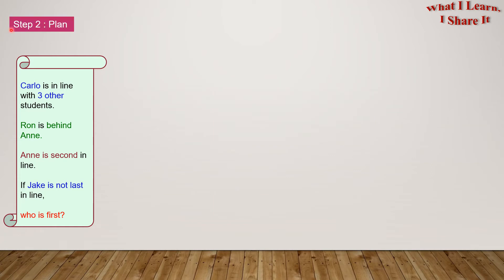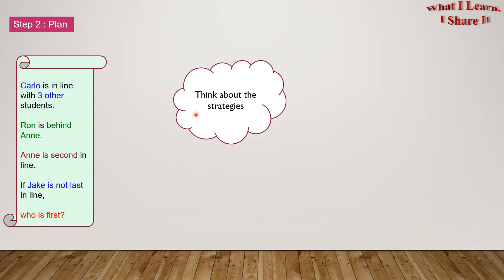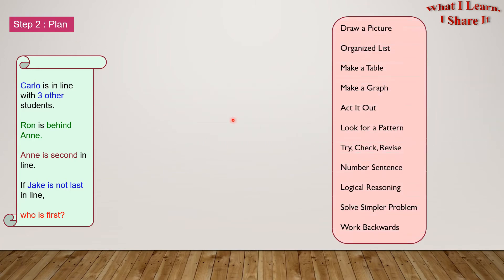Step two: plan. Think about the strategies. Here are all the strategies: draw a picture, organize list, make a table, make a graph, act it out, look for a pattern, try check revise, number sentence, logical reasoning, solve a simpler problem, and work backwards. I've made a video about each of them and posted the link in the description box. For this word problem, I'm going to use make a table and logical reasoning.